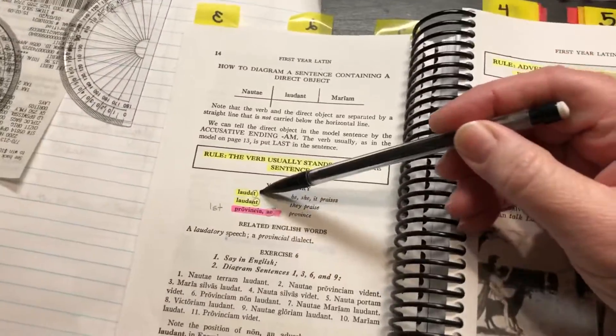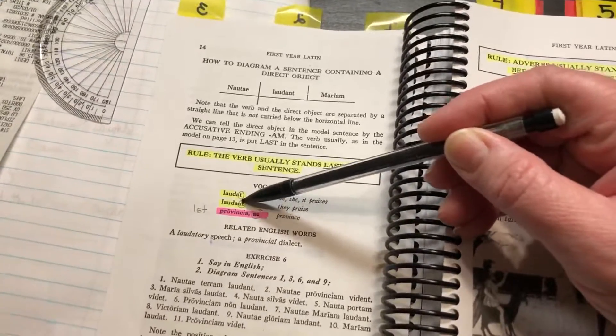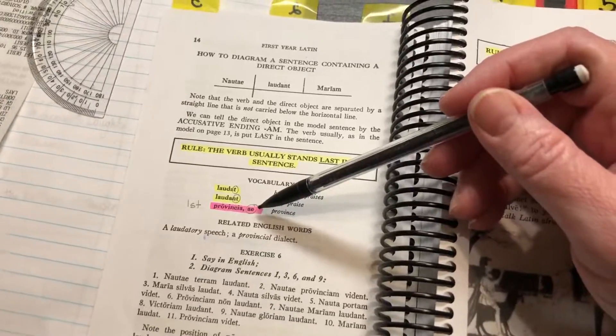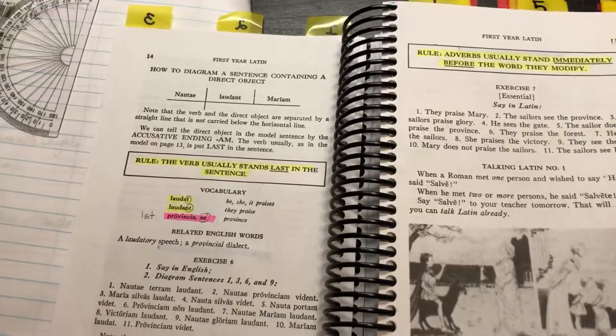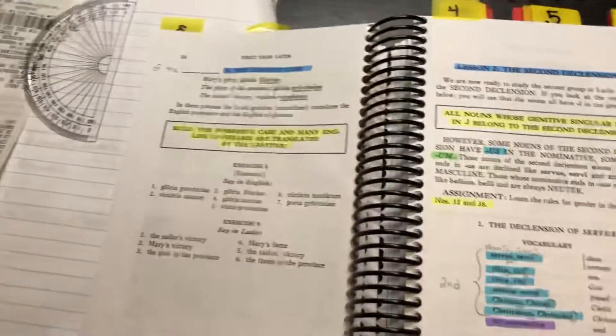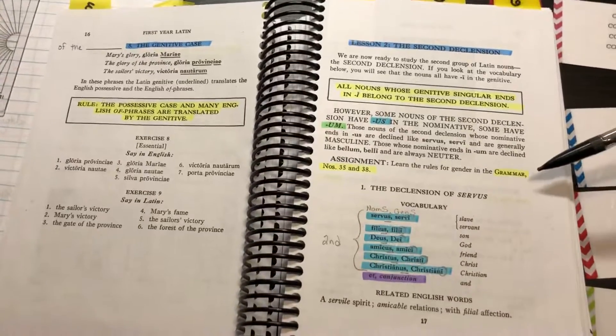Depending on the declension or the gender of the noun, I would highlight them pink, blue, or green. You can see here the other thing that I have is whenever there was a new grammar rule introduced, I would mark it here in the yellow.